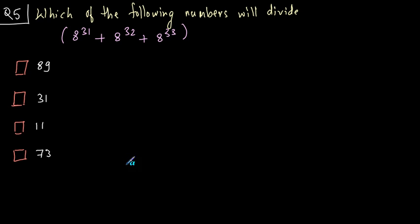Now the 5th and the last question for this video. Which of the following numbers will divide this expression? First we will have to evaluate this expression. 8 raised to 31 plus 8 raised to 32 plus 8 raised to 33. You can take out 8 raised to 31 as common from this expression. Taking out 8 raised to 31, we get inside the bracket, if we take out 8 raised to 31 from 8 raised to 31, we get 1 from this, we get 8 plus 8 square.